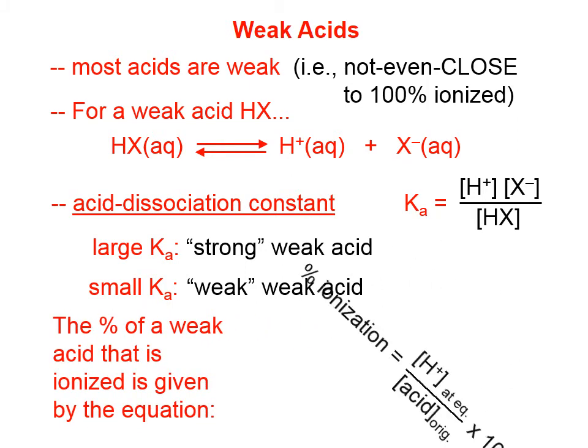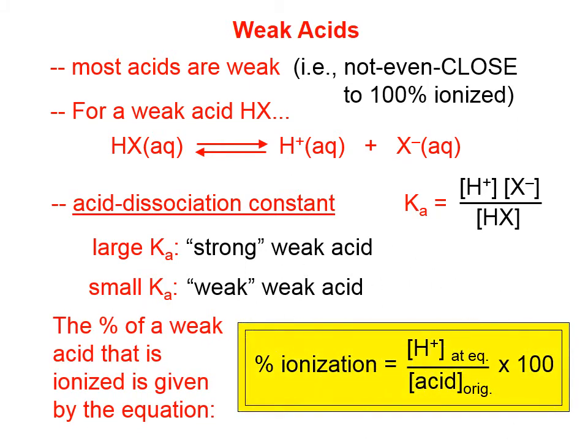This equation gives the percentage of a weak acid that is ionized. It's essentially the H-plus ion concentration at equilibrium divided by the original acid concentration, multiplied by 100 to put it in percentage form.